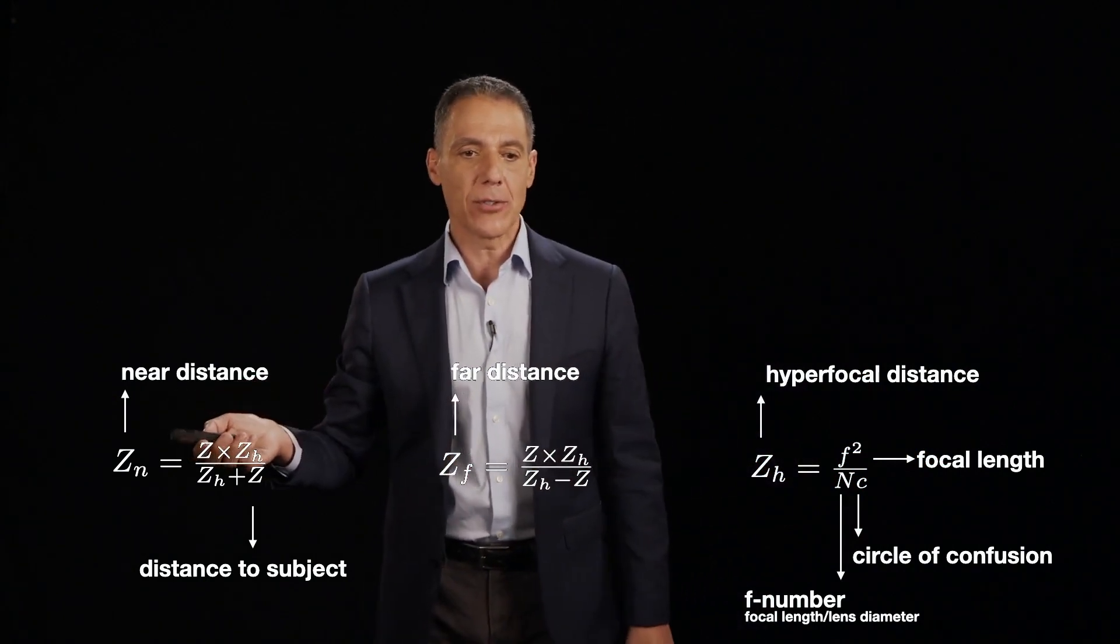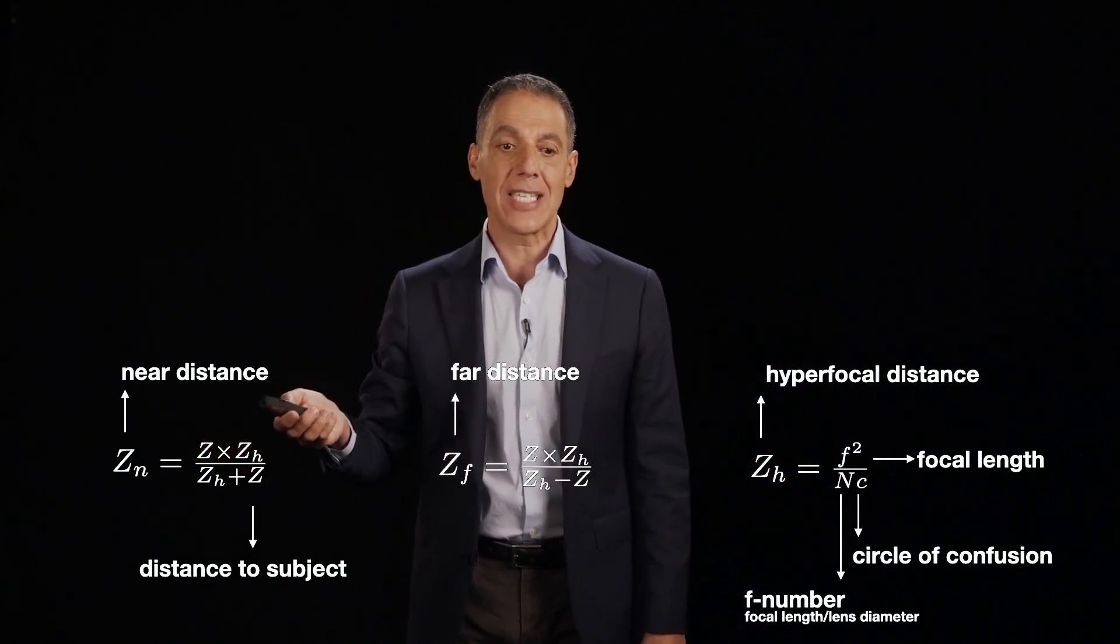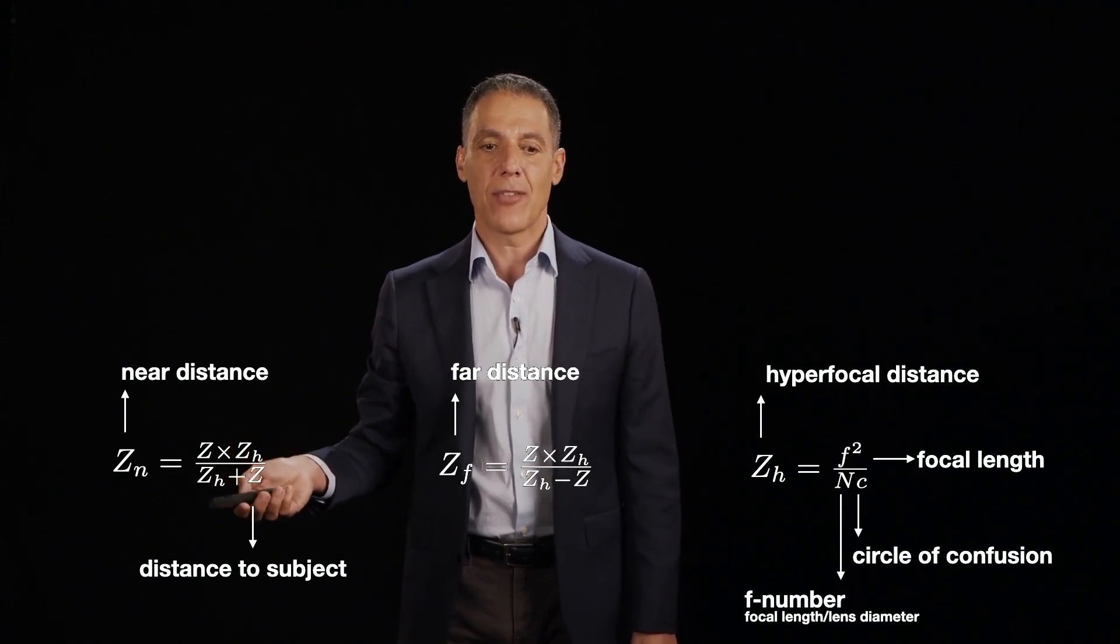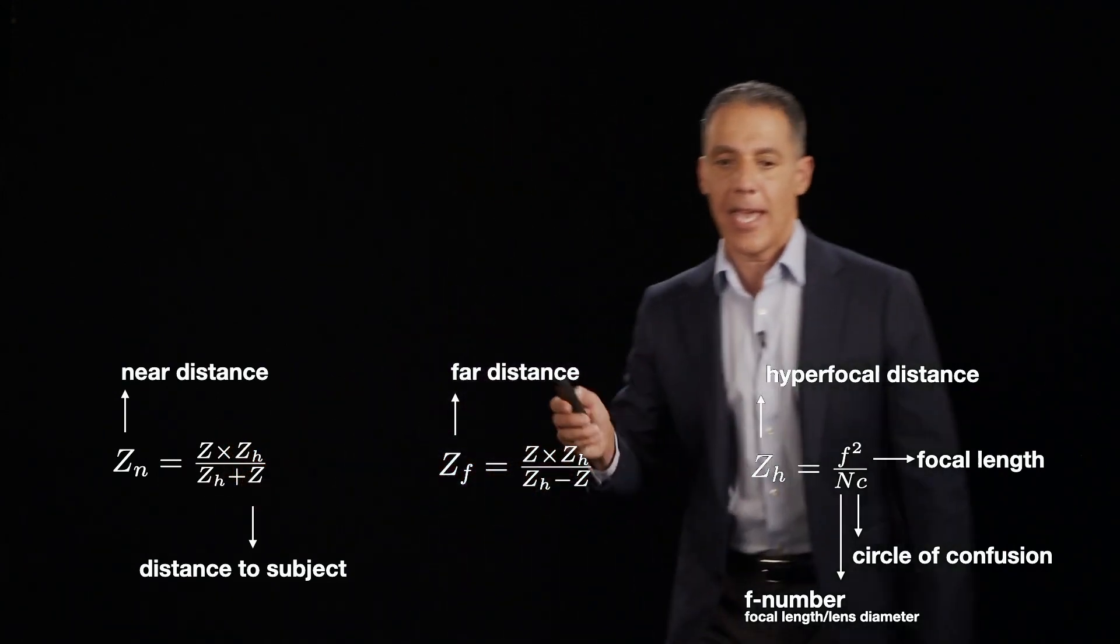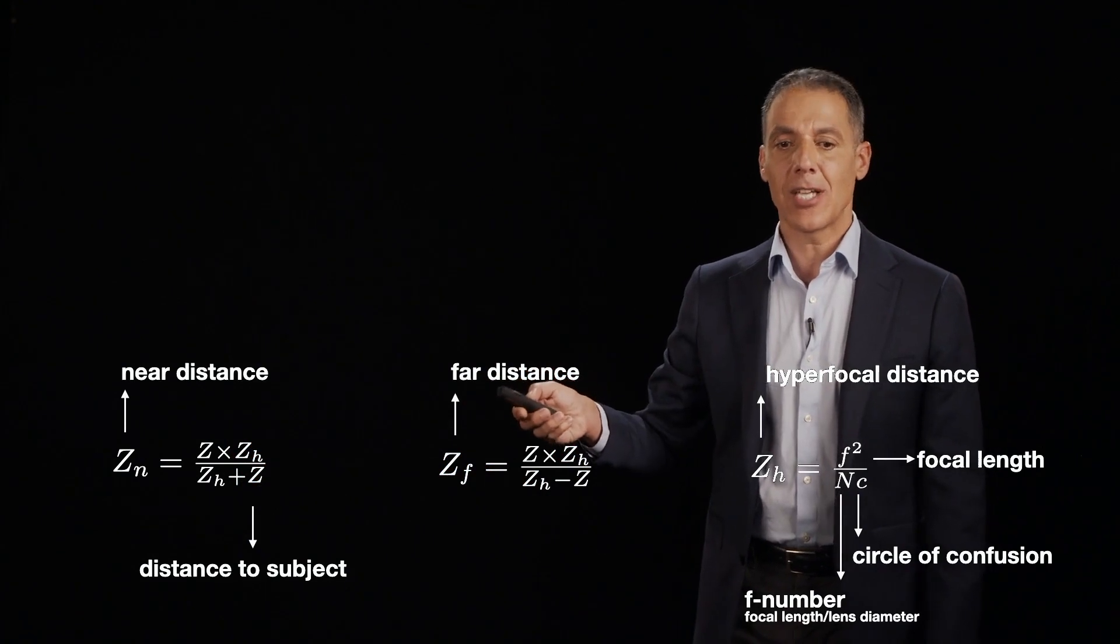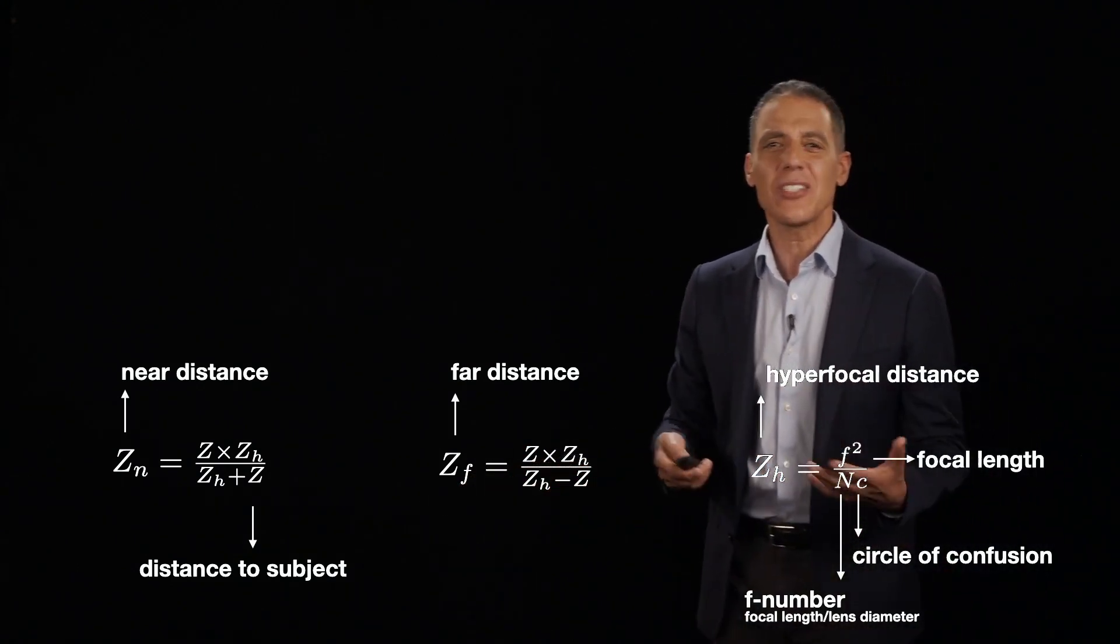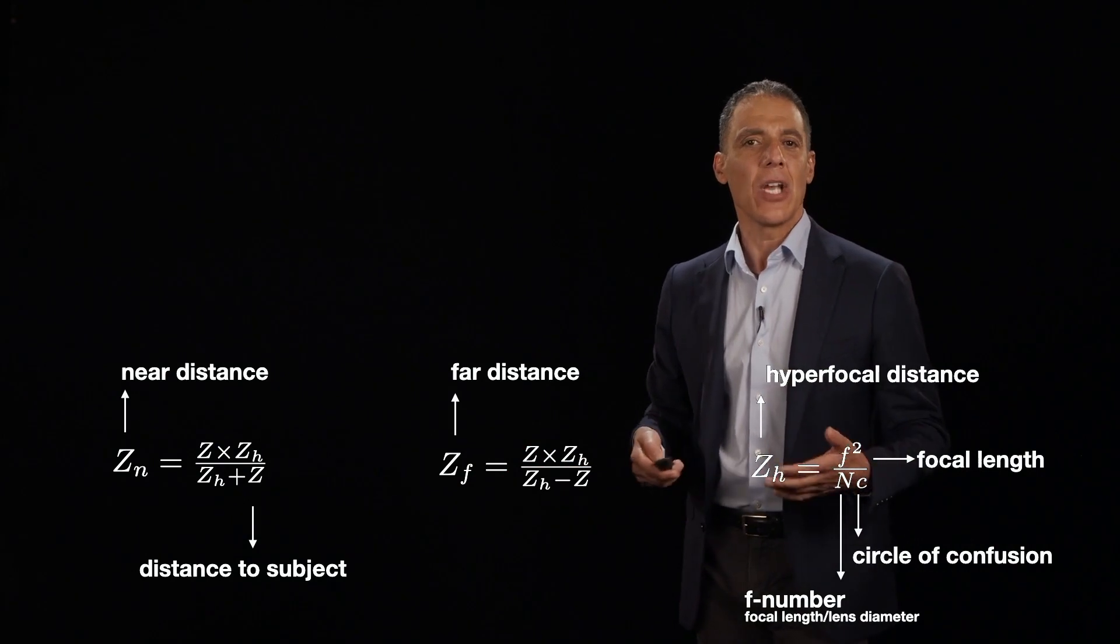So let me define the near distance to be the ratio of Z, that's how far your subject is times the hyperfocal distance divided by the sum of those two components. And the far distance is Z times the hyperfocal distance. And the denominator now is Z sub H minus Z again, Z sub H is the hyperfocal distance. And so these equations don't really mean anything. So we can get some intuition by looking at this table here.